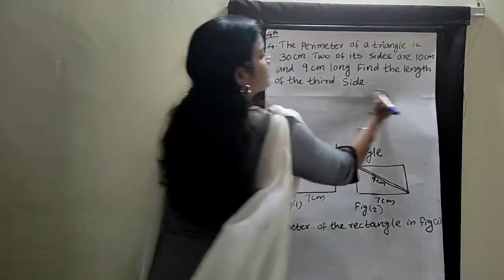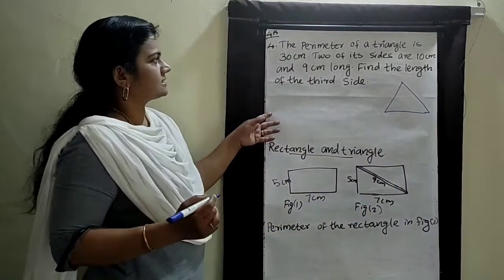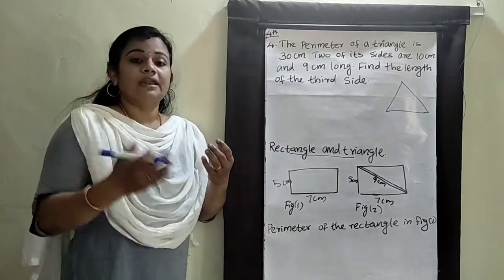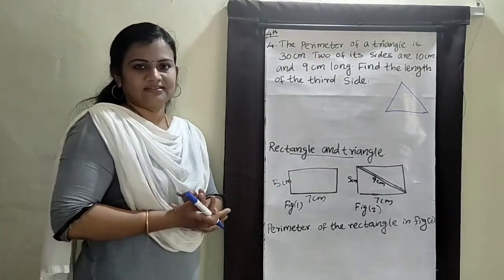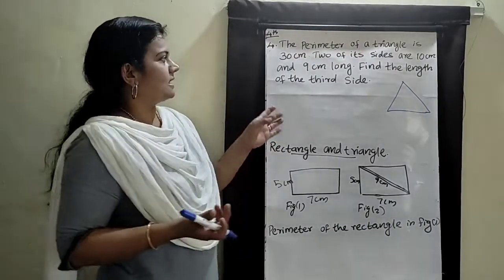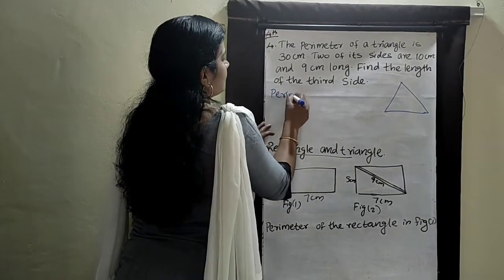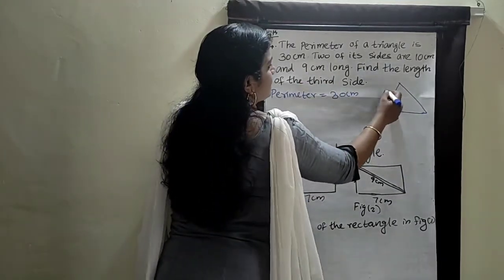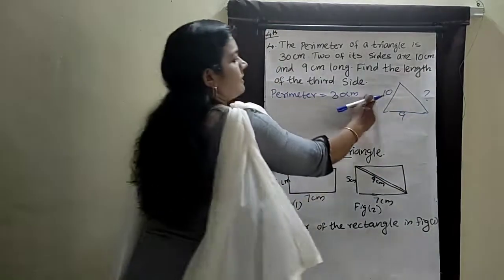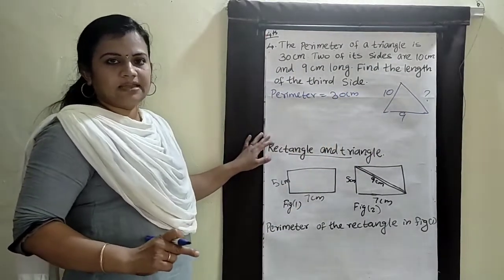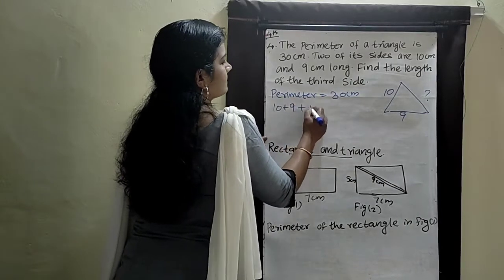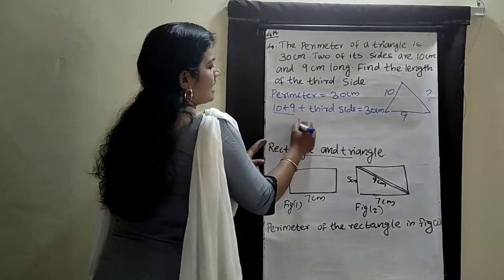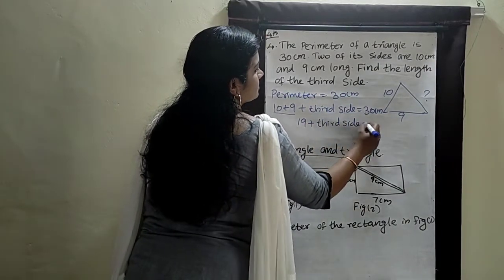We already know that a triangle has 3 sides. The perimeter of these sides equals 30. To find the perimeter of a figure, the sum of all sides' lengths equals the perimeter, which is 30 centimeters. One side is 10, another side is 9, and the third side we need to find out. So 10 plus 9 plus third side equals 30 centimeters, giving us 19 plus third side equals 30.